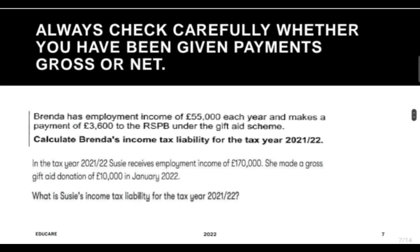Always check carefully whether you have been given payments gross or net. In the first example, Prinda has employment income of £55,000 each year and makes a payment of £3,600. Remember that if an individual is making a payment, it means this is a net amount and you need to gross it up. While in the second question, in tax year 21-22, Susie received employment income and made a gross gift aid donation — the word 'gross' is given, which means the amount is given as gross.